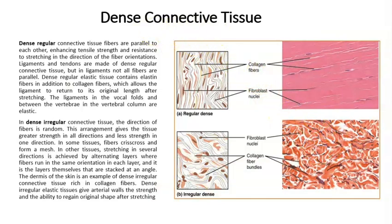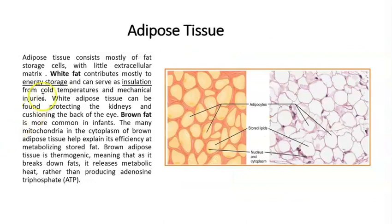Adipose tissue has main jobs such as producing insulation and energy storage, and there are two main kinds. The one that adults have is white fat, and the other one is called brown fat — this is the one that newborns have. We have a figure here of the fat.